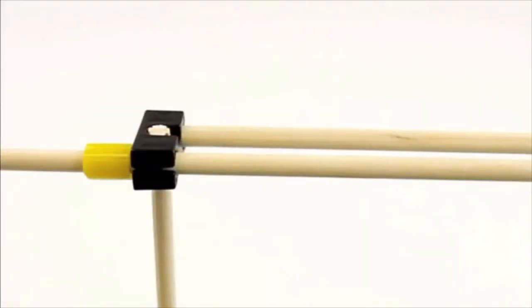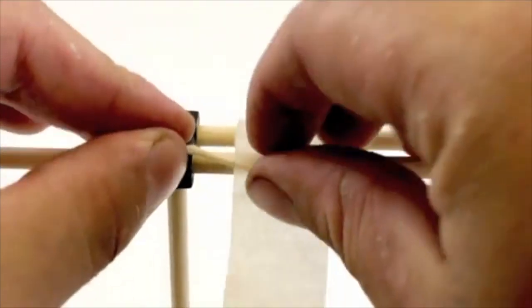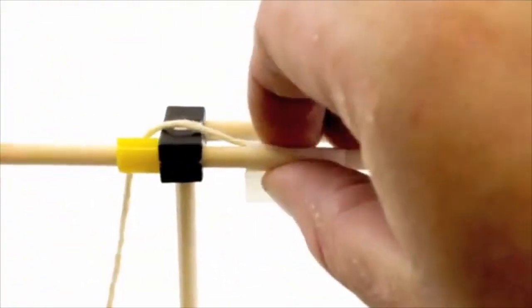Cut a piece of string that is 450mm which is about 1.5 feet. Then tape it onto the dowel with the hub on it.